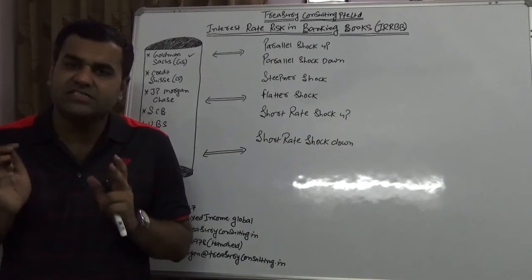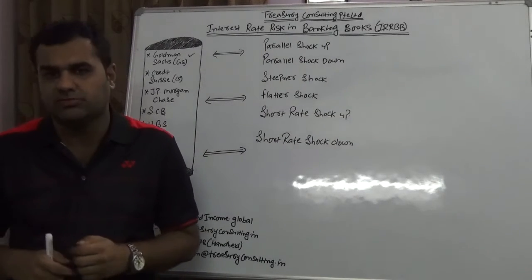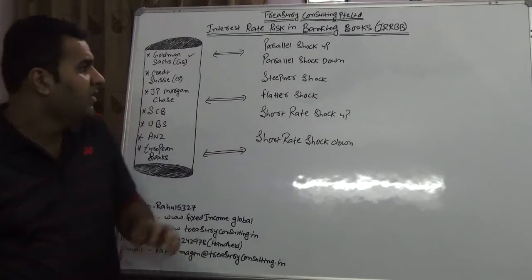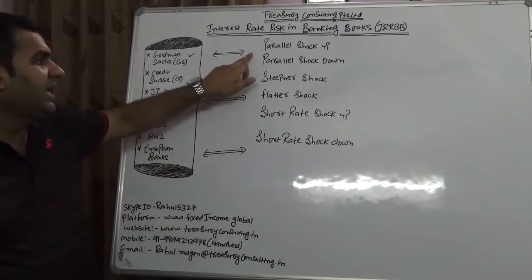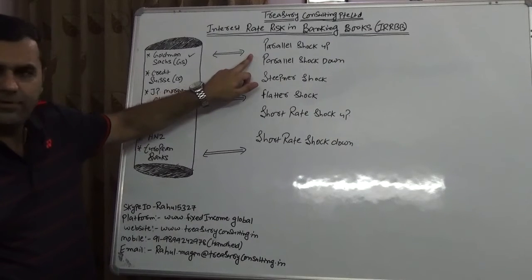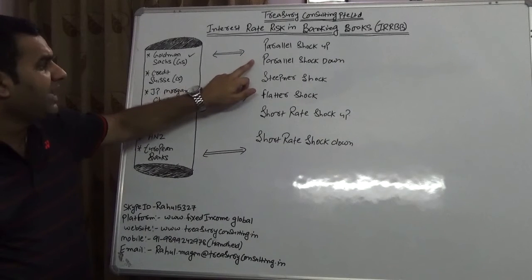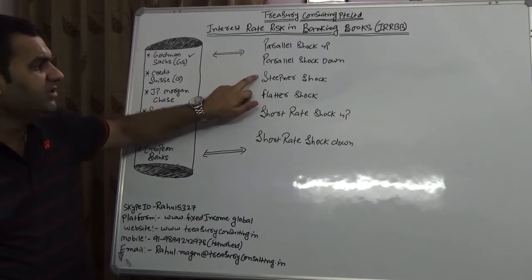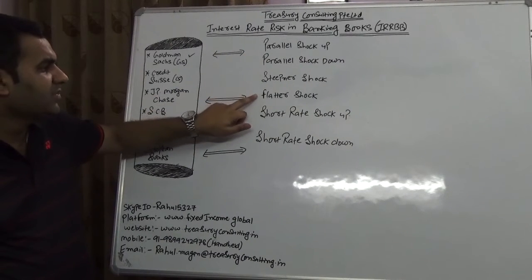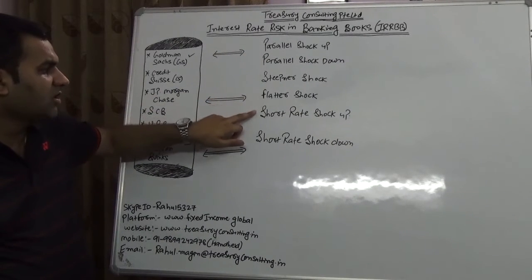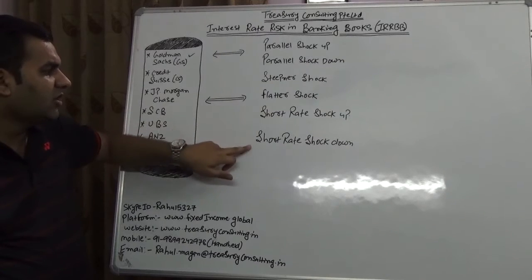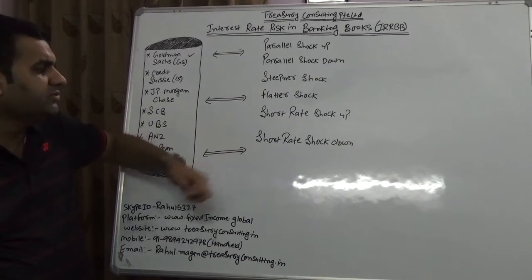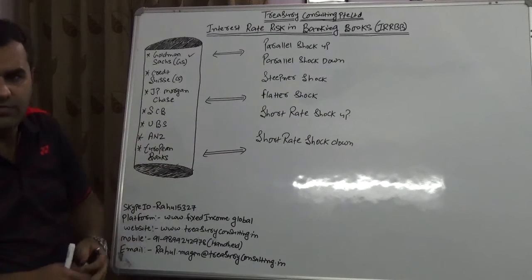There are practically six types of shocks: one is parallel shock up, parallel shock down, steepener shock, flatter shock, short-term shock up, and short-term shock down.